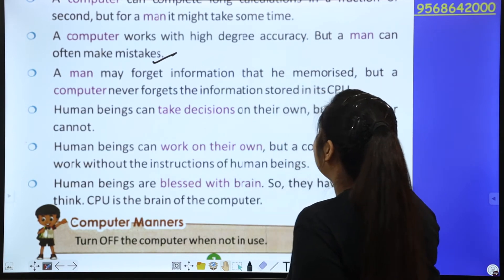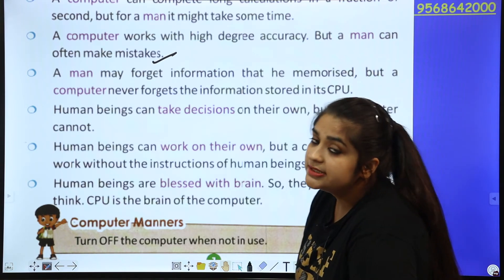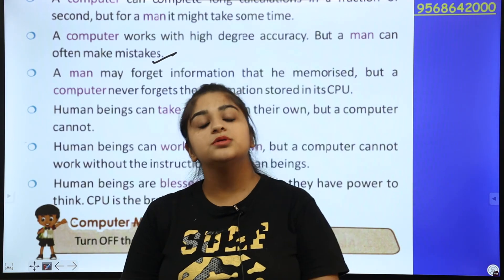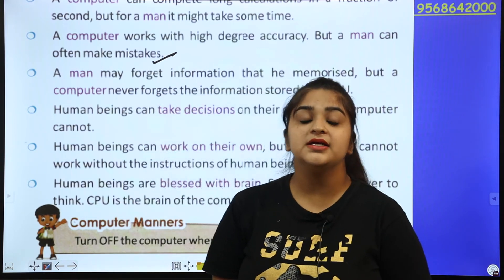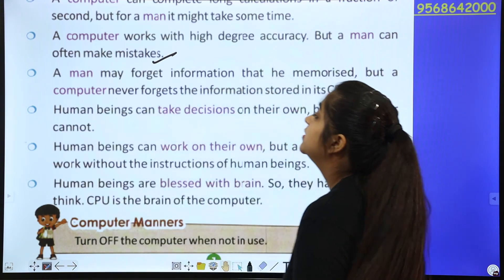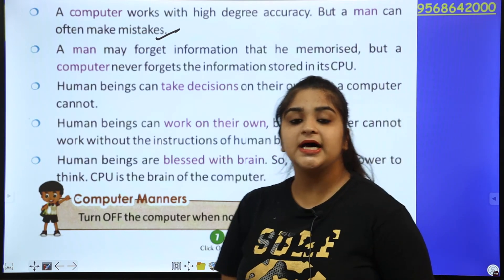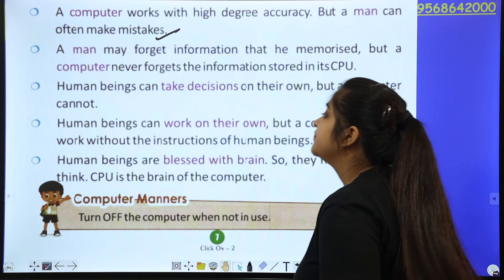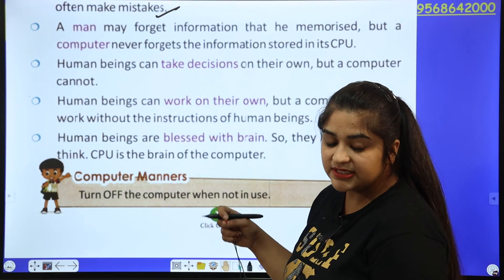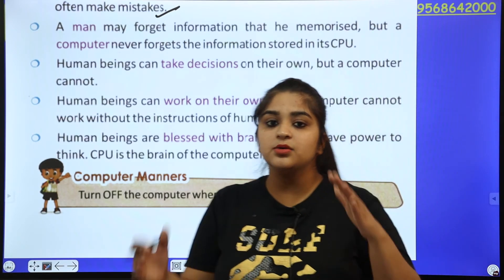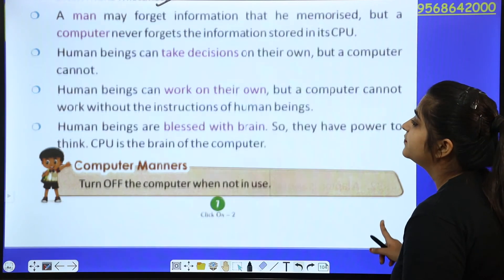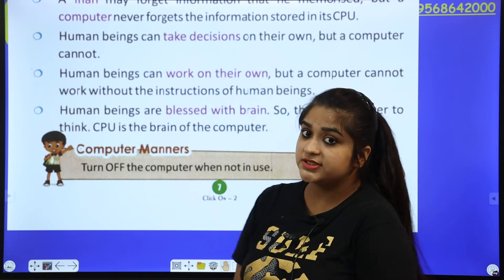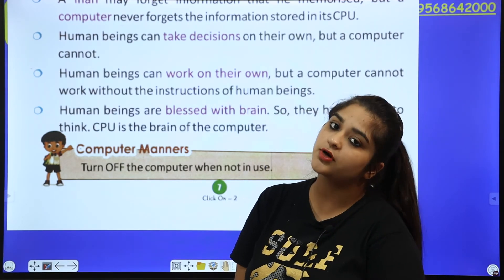A human may forget information that they memorized, but a computer never forgets the information stored in it. That is why the CPU is called the brain of the computer. Human beings can take decisions on their own, but a computer cannot — it needs instructions. Human beings are blessed with a brain and have the power to think, while CPU is the brain of the computer.